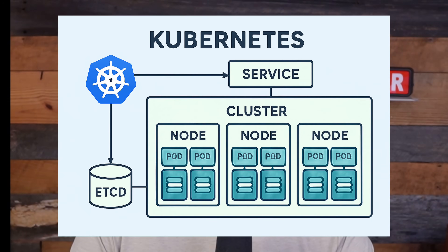So how does Kubernetes work? Groups of servers are organized into clusters for running containers. The Kubernetes system takes a collection of servers and puts them into cluster formations, which allows us to run containers at scale. Each cluster can run a couple of containers or hundreds, sometimes thousands of containers.